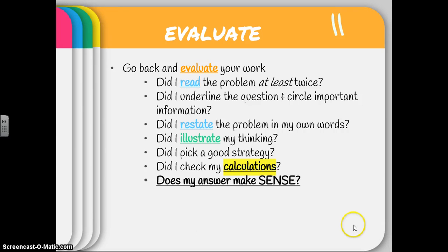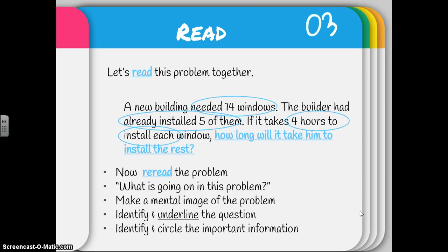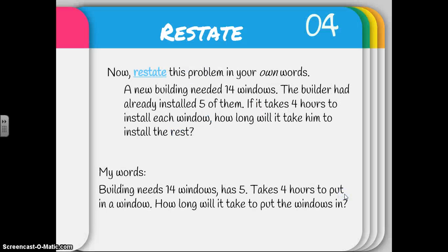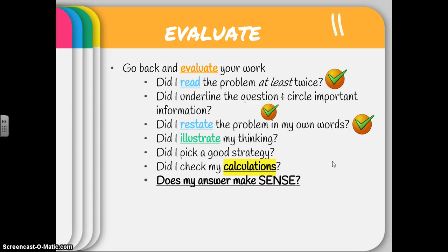I still need to evaluate though. So let's go down the list. Did I read that problem at least twice, and did I underline the question and circle important information? Let's go back and look at my work. I did read it — there's my important information, I found my question. I think I can give myself checks for those. Did I restate the problem in my own words? My building needed 14 windows, it has five, takes four hours to put in — how long will it take to put the windows in? Yep, I restated it. I think I can give myself a check for that.